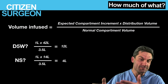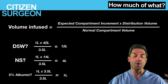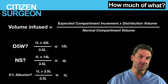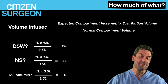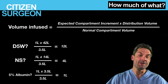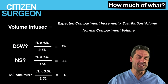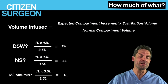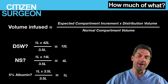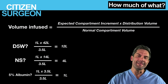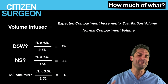For 5% albumin: 1 ÷ 3.5 × 3.5 L = 1 liter — a one-to-one replacement. There's a whole discussion about colloids versus crystalloids for trauma resuscitation that we won't get into now, but this framework helps you determine what volume to infuse of what fluid and where that fluid is going to go.